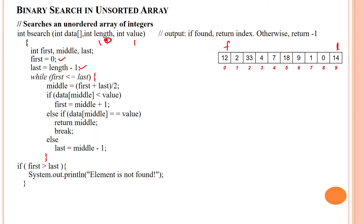Number of elements is 10. First index 0 is less than or equal to last index 9 — yes, it is true. Calculating middle index: 0 plus 9 divided by 2 is 4.5, so floor value is 4. Middle index is 4, so data of middle is 7.